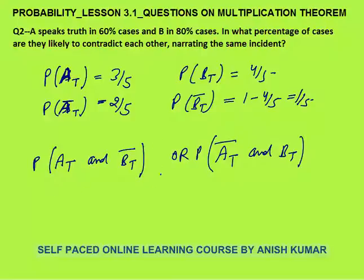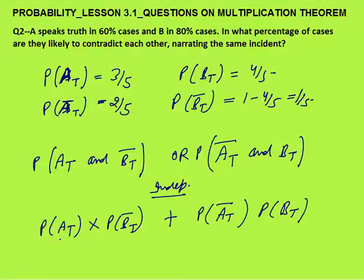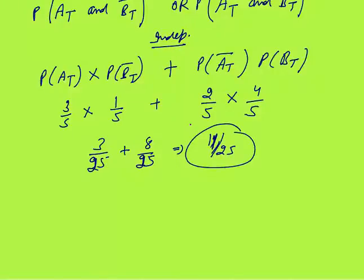As events are independent, probabilities get multiplied: P(A speaks truth) × P(B not speaking truth) + P(A not speaking truth) × P(B speaks truth) = (3/5 × 1/5) + (2/5 × 4/5) = 3 by 25 + 8 by 25 = 11 by 25. So 11 by 25 is the final answer.